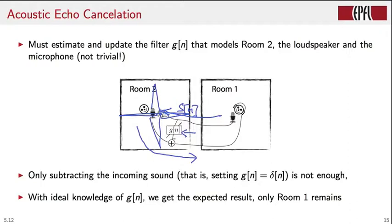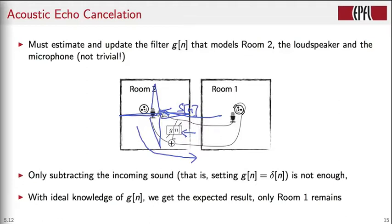The situation is further complicated because we also need to estimate the loudspeaker's impulse response, and because conditions in room two change over time — people move around, temperature changes — so we must re-estimate G over time. When all these factors are properly accounted for and echo cancellation is performed correctly, the result is near perfect, since we assumed perfect knowledge of room two. The only remaining deformation comes from the sound being convolved with room one.